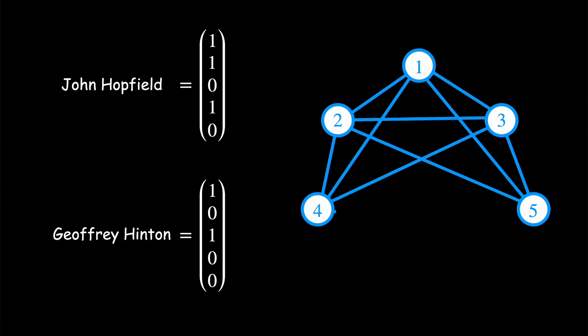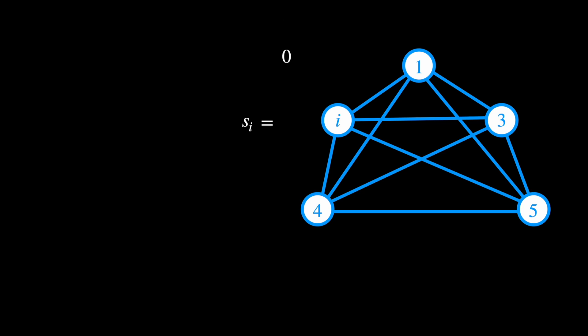Every name, or sequence of zeros and ones, corresponds in our network to a set of active neurons. Like the name John Hopfield corresponds to activating those neurons. The name Geoffrey Hinton corresponds to activating those neurons. And so on. The activation of each neuron i is represented by an activating potential Si equal to 0 or 1.